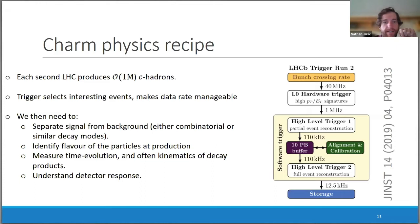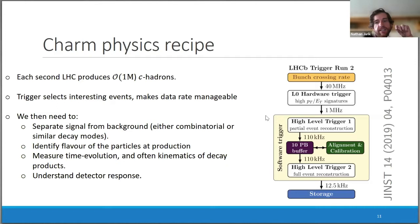Unfortunately we don't have the capability to save all of this charm to disk, so we first have a trigger which tries to select interesting events and suppress backgrounds. This starts with a Level Zero hardware trigger looking for high-pT and high-energy signatures, then a High Level Trigger 1 doing partial event reconstruction looking for high-momentum displaced tracks. A full alignment and calibration allows full event reconstruction still in the High Level Trigger 2, where we decide if we want to save the event.